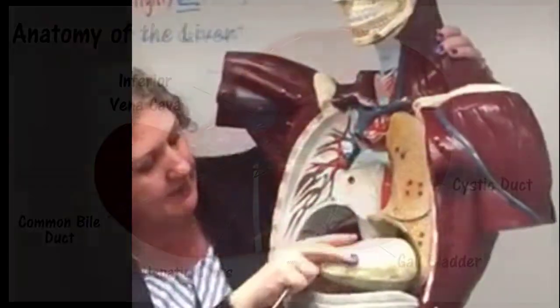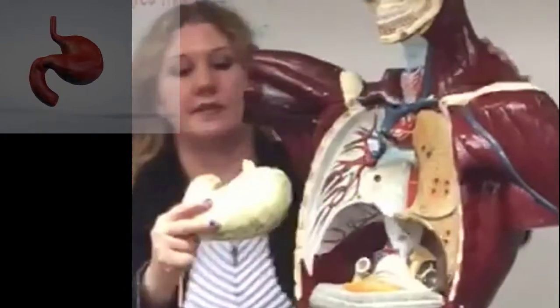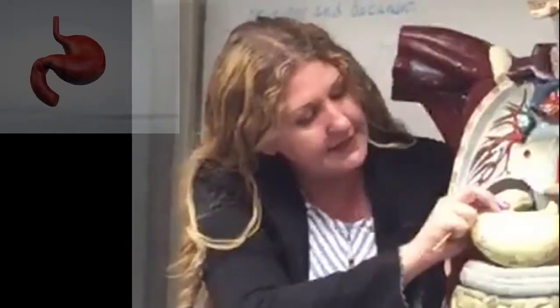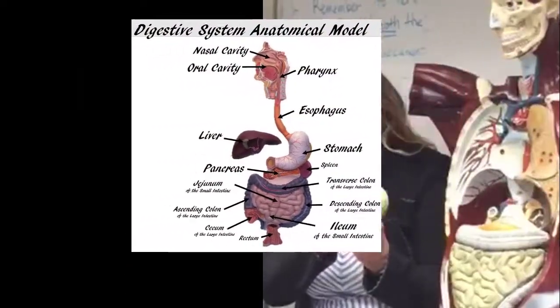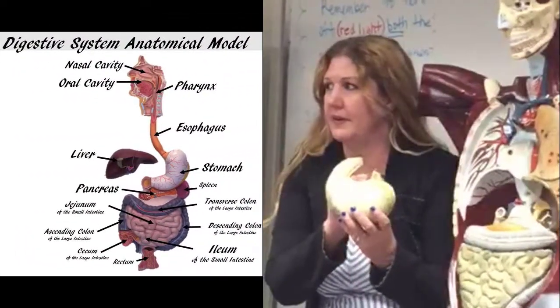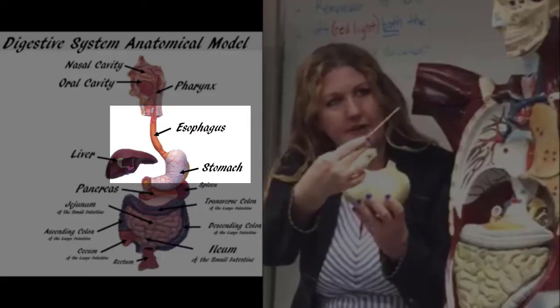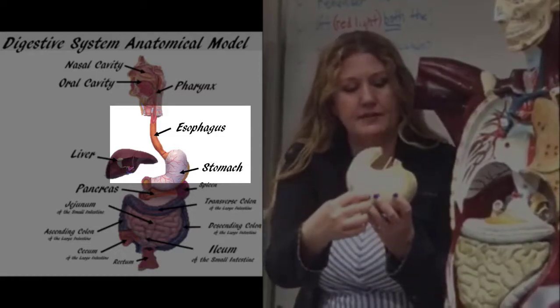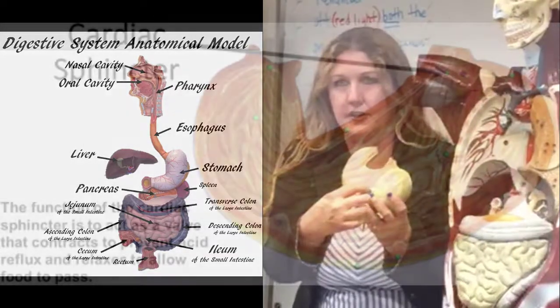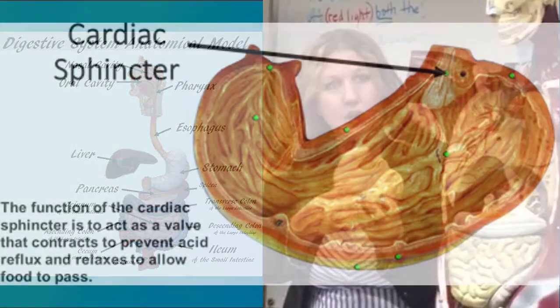Here is my stomach. You'll notice that both the entrance and the exit kind of stick up. This is the point at which the esophagus connects with the stomach. The bolus of food is going to come down the esophagus and then go through this structure to enter into the stomach. This is your cardiac sphincter.